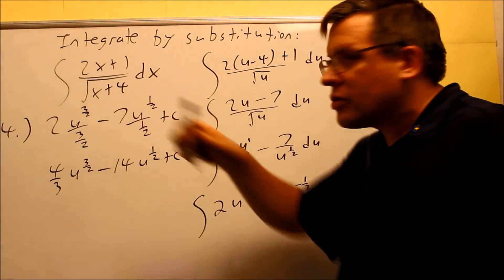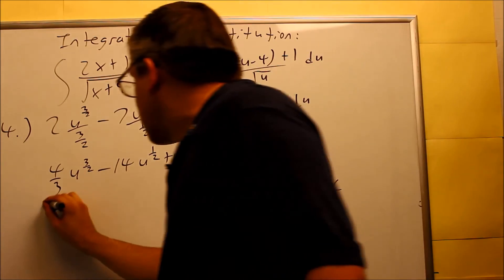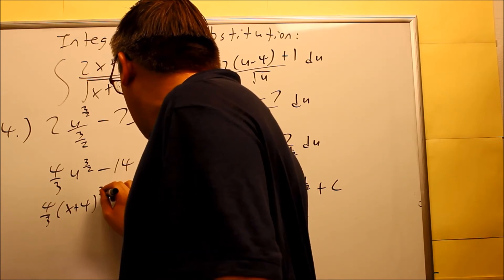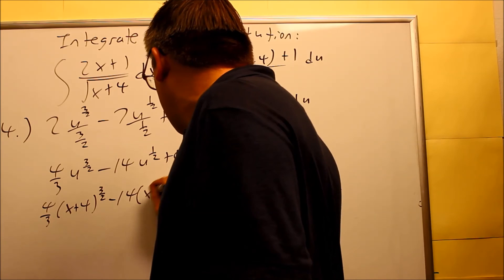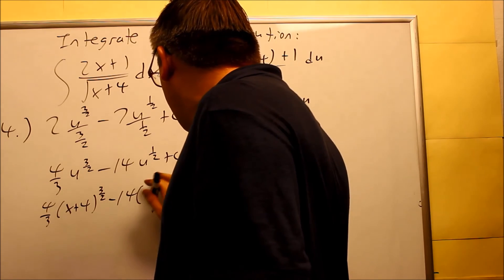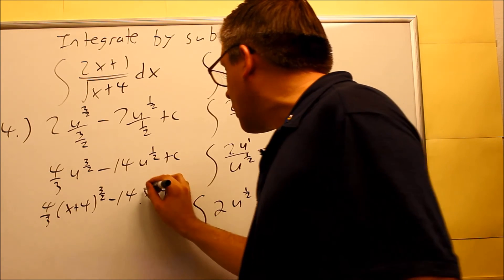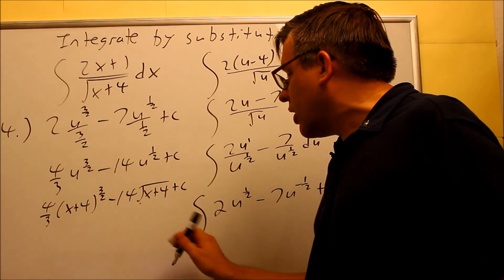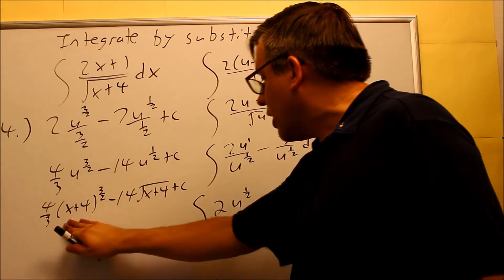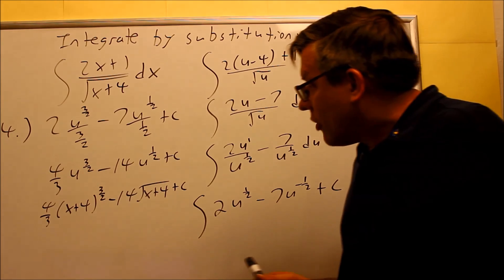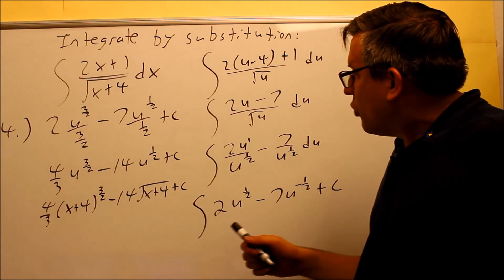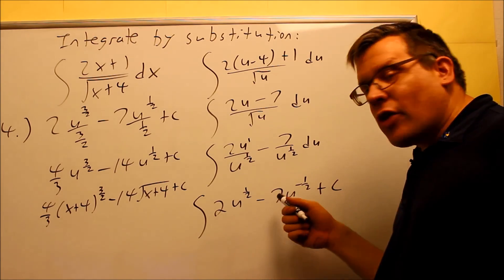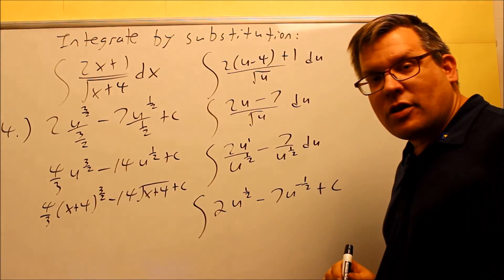We originally said U is equal to X plus 4, so now I have four-thirds X plus 4 to the 3 halves minus 14 times X plus 4 to the 1 half, which if you want to leave it as 1 half you can, or if you'd like to write it as a square root you can do that as well. And then this right here would be your final answer by using change of variables. We're able to make everything all in terms of U, make it easier by splitting up the fraction, and then we get our final answer which is right there.